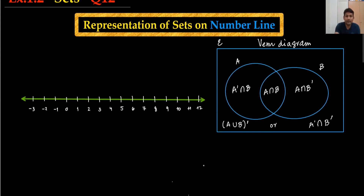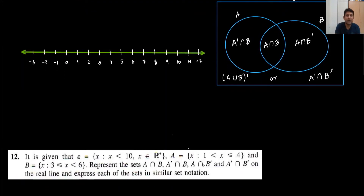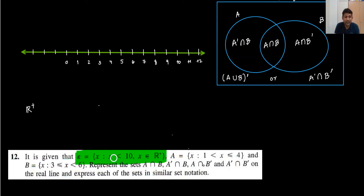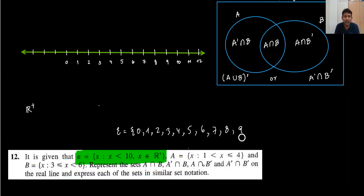Moving to question number 12. The universal set is R-plus — the plus sign means we are talking about only positive values. The universal set contains values from 0 up to but not including 10: 0, 1, 2, 3, 4, 5, 6, 7, 8, 9 — but not 10. Actually we cannot just list these because we also have 9.5, 9.9, 9.999 — all values are included except 10.